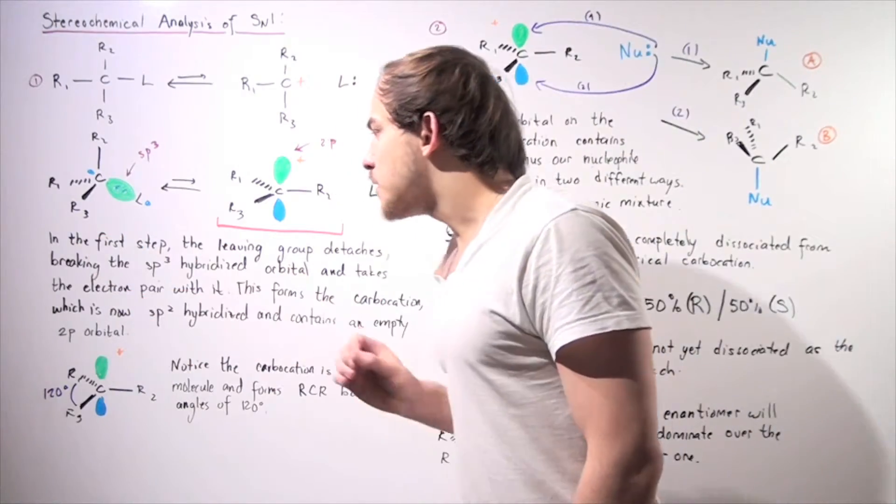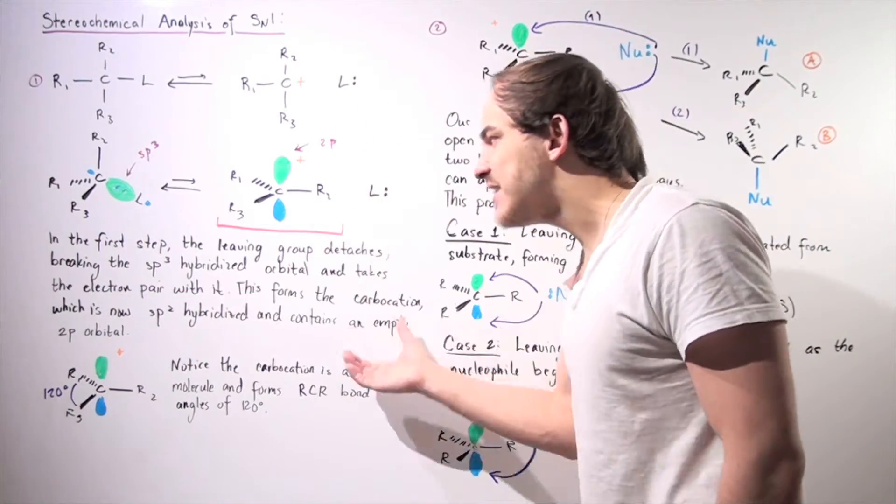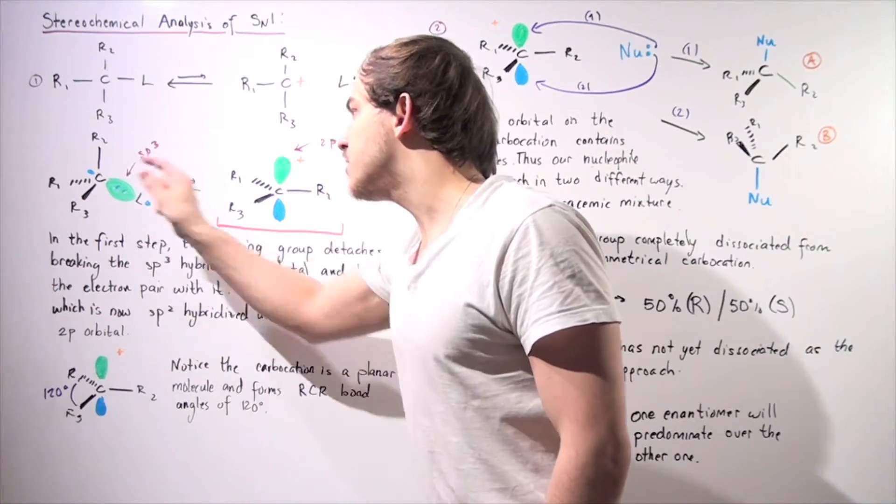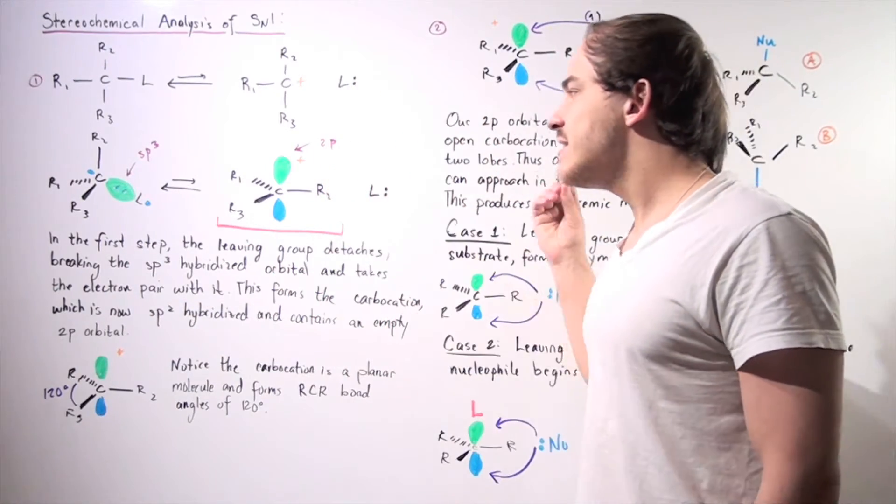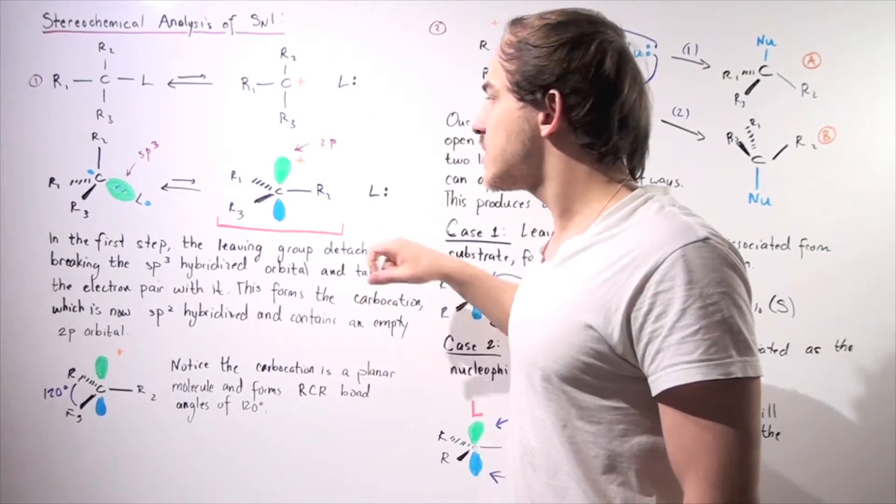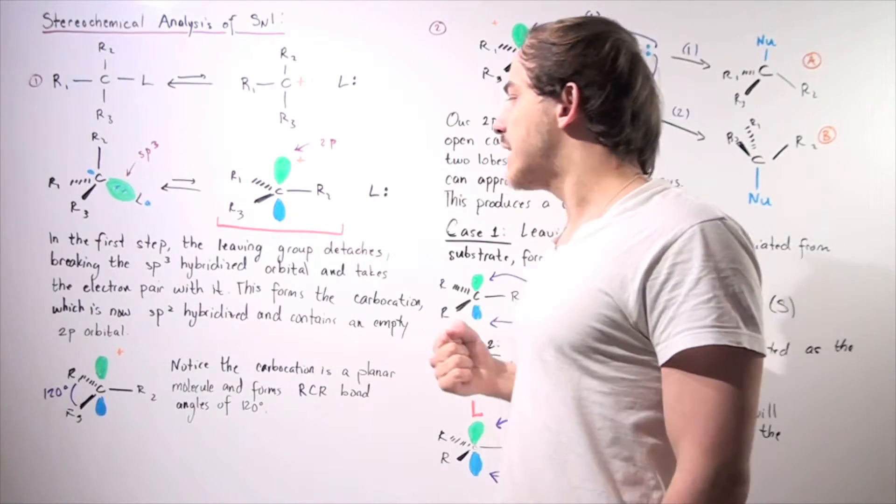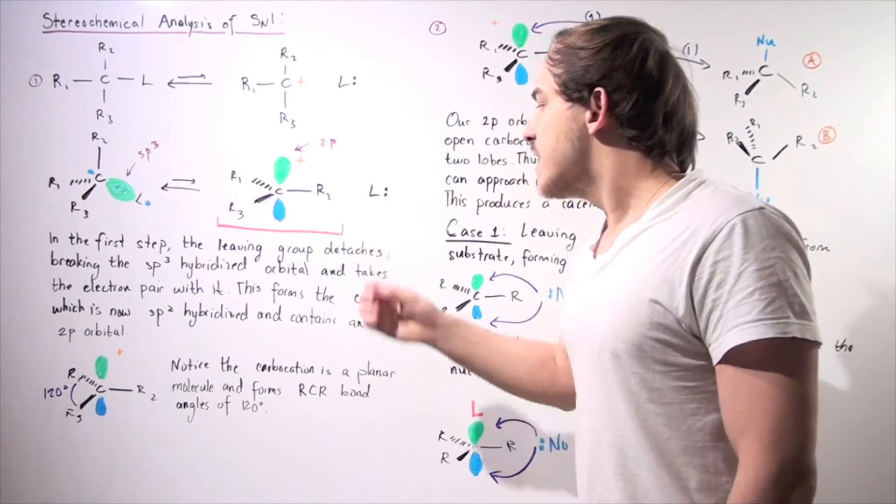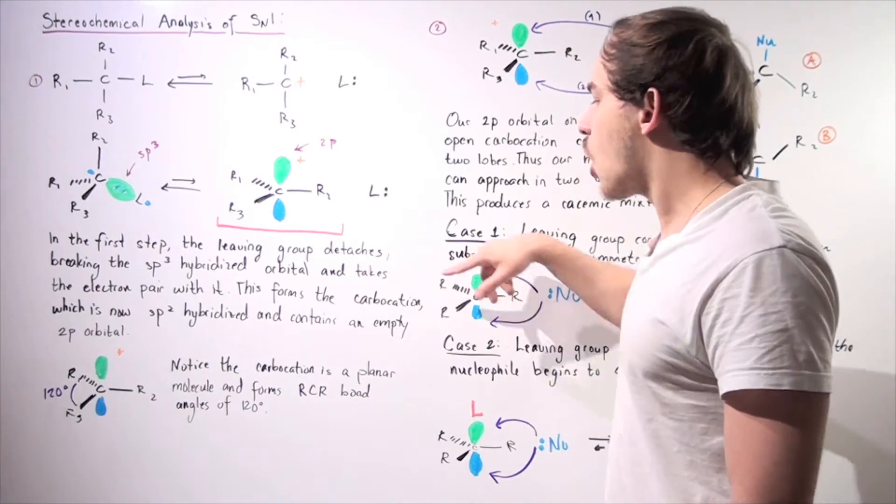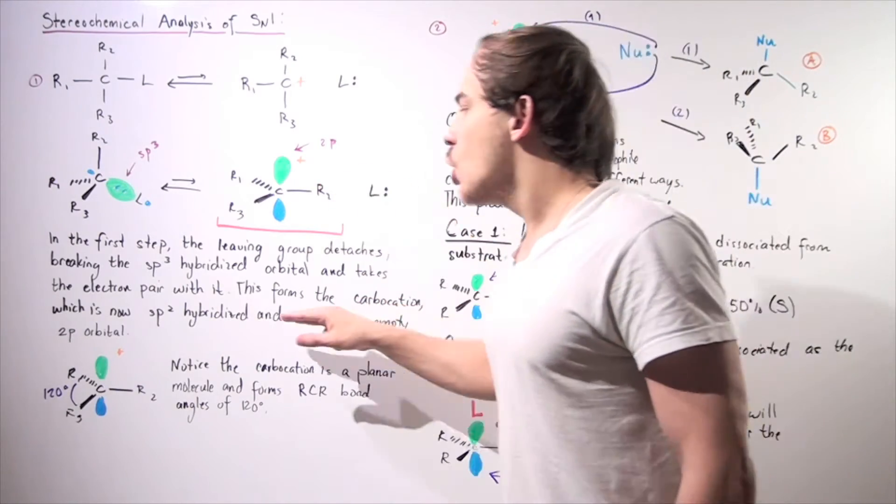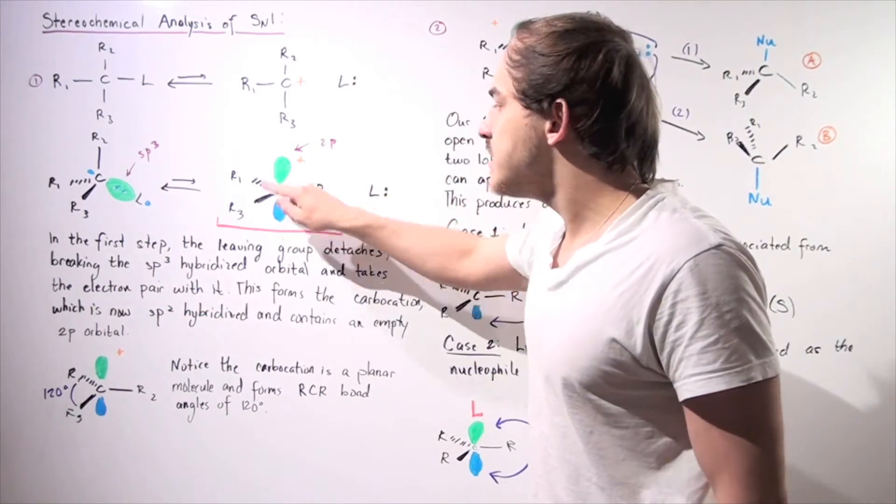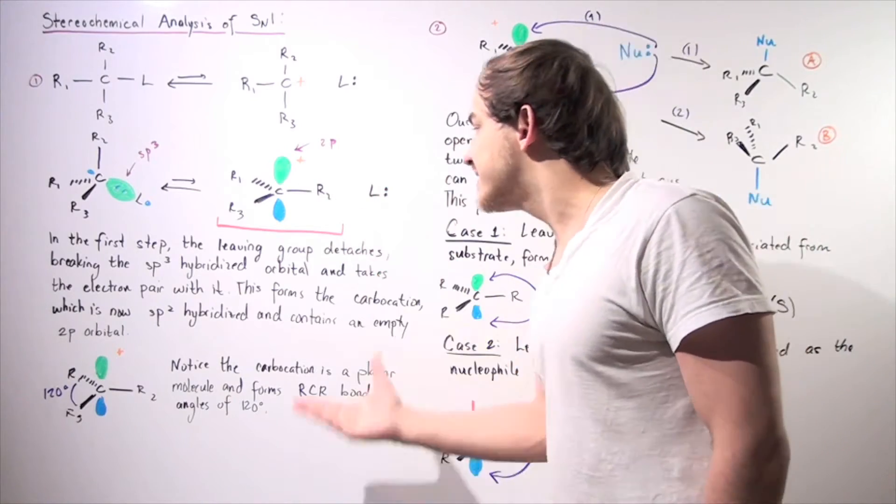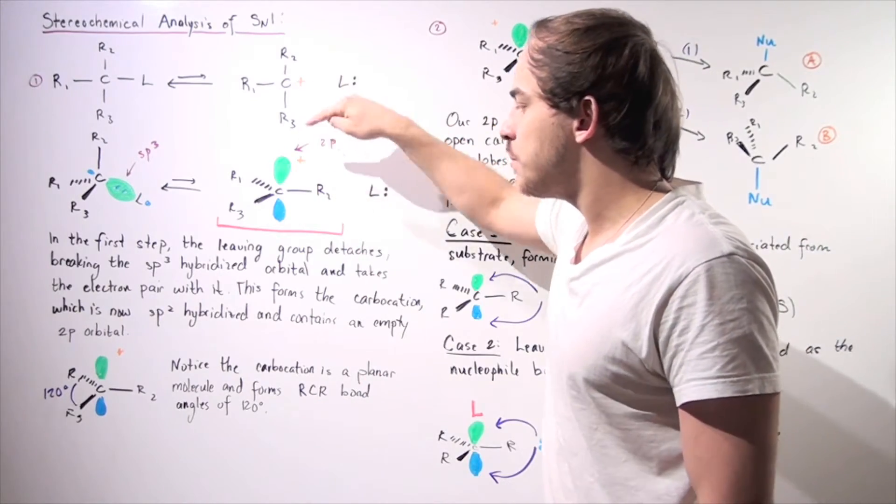So once again, in the first step, the leaving group detaches, breaking the sp3 hybridized orbital, and that takes the electron pair. So the leaving group takes our electron pair from the orbital. This forms the positively charged carbocation intermediate, which is now sp2 hybridized, and contains an empty 2p orbital.